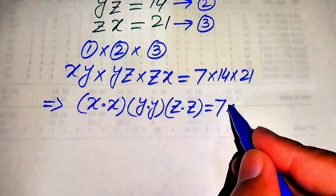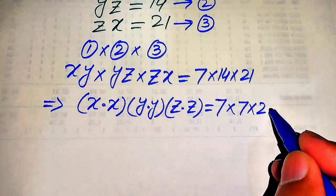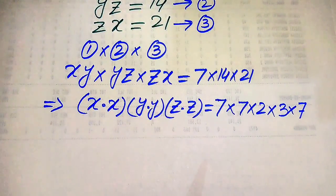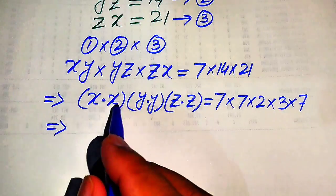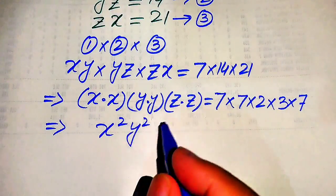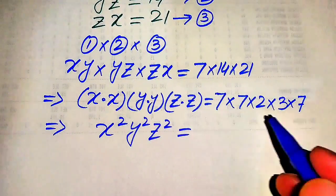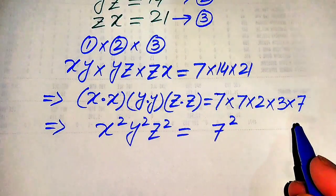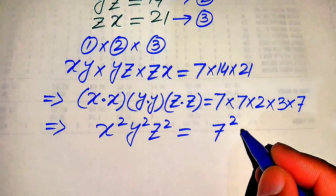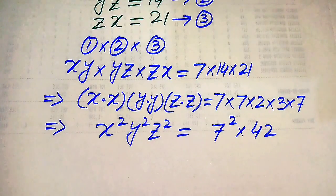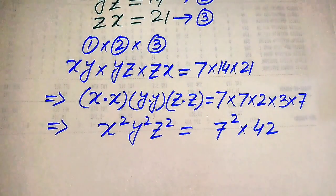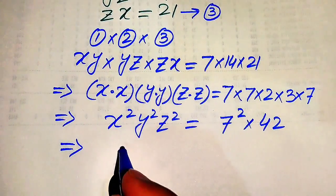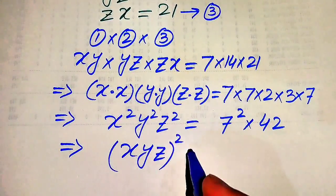We write 14 as 7 times 2, and 21 as 3 times 7. On the left hand side, x times x becomes x squared, y squared, and z squared. On the right hand side, 7 times 7 is written as 7 squared, and 2 times 3 becomes 6, and 6 times 7 equals 42. So this is written as 42, and we see all terms on the left hand side are in square form.